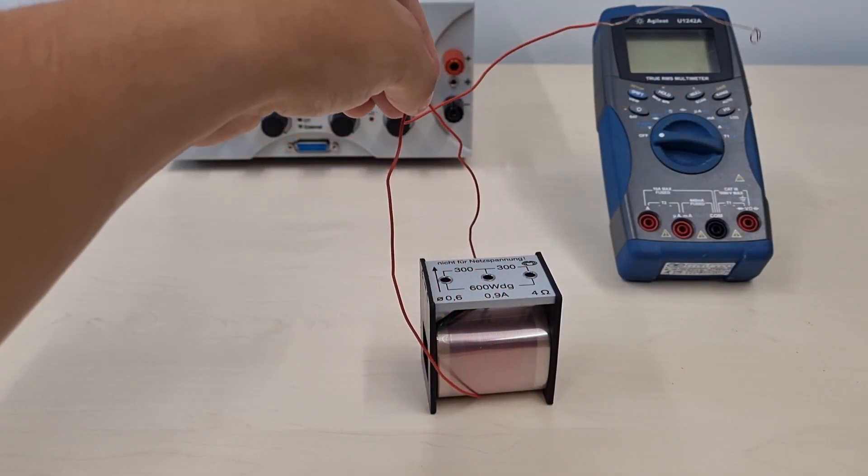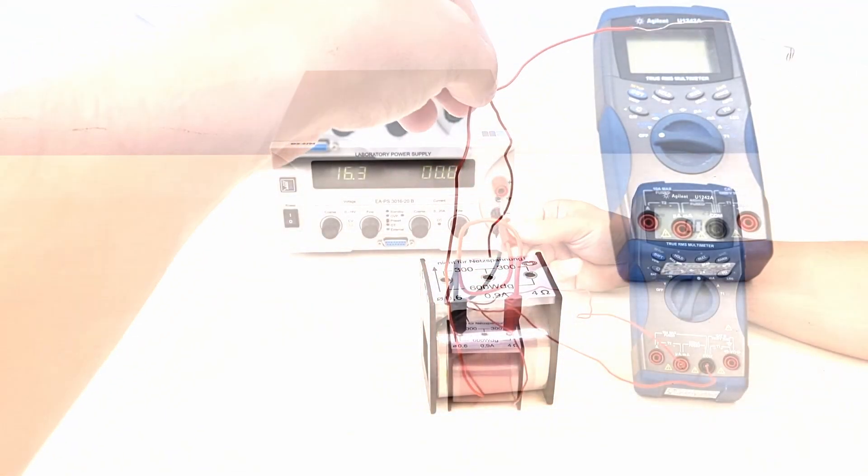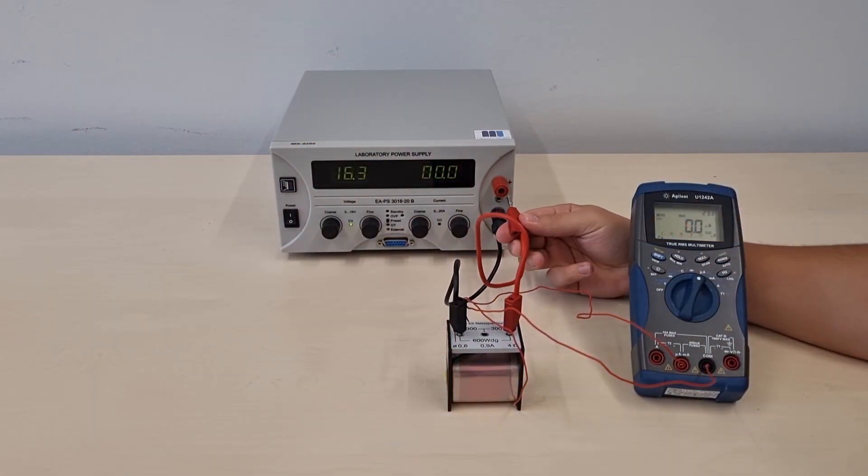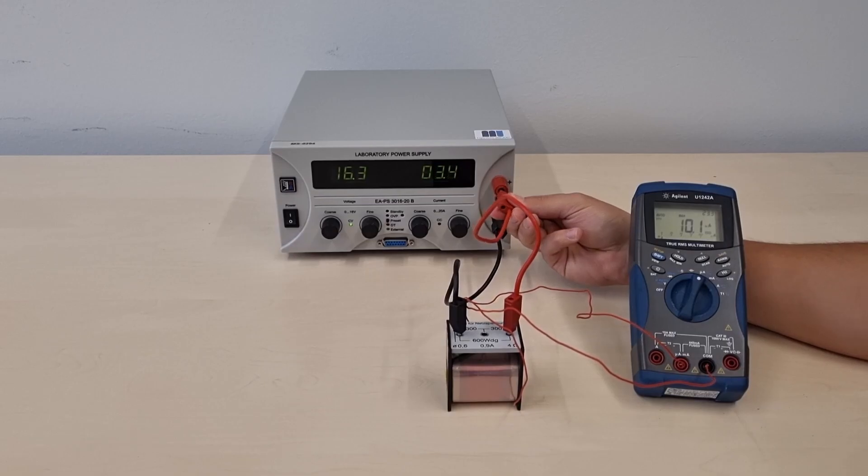In this case the measured current should stay nearly the same. But we have to consider some small losses because we are working with low current.